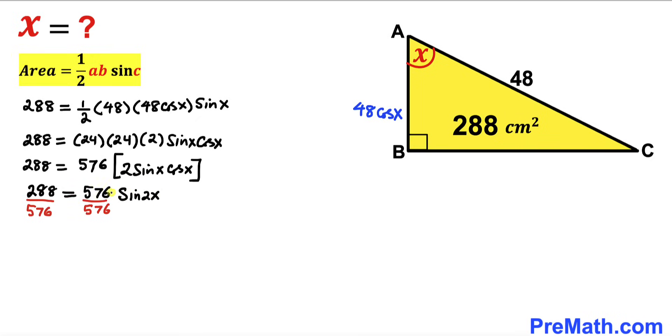Now let's divide both sides by 576. So sine of 2X turns out to be one-half. Or we can write this as 2X equals sine inverse of one-half.